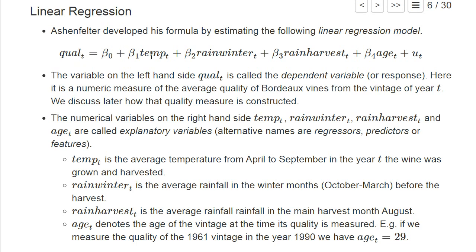Then he has different explanatory variables on the right-hand side which are basically all numerical variables, so they have all some numbers for a particular vintage t. We have the temperature, that's the average temperature from April to September in the year t where the wine was grown, so for the vintage t.